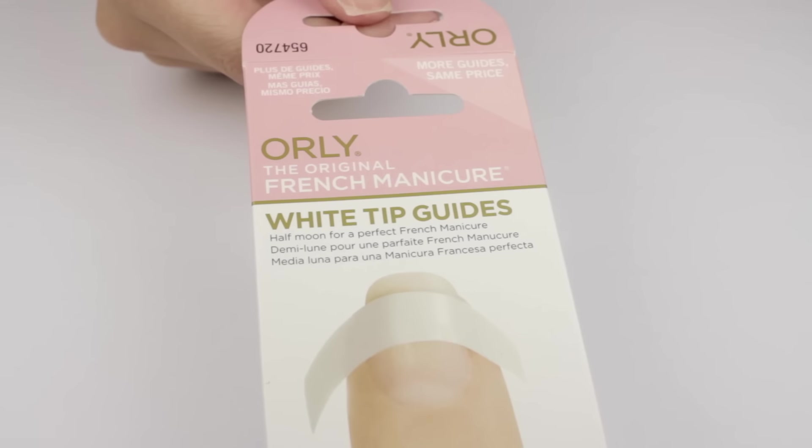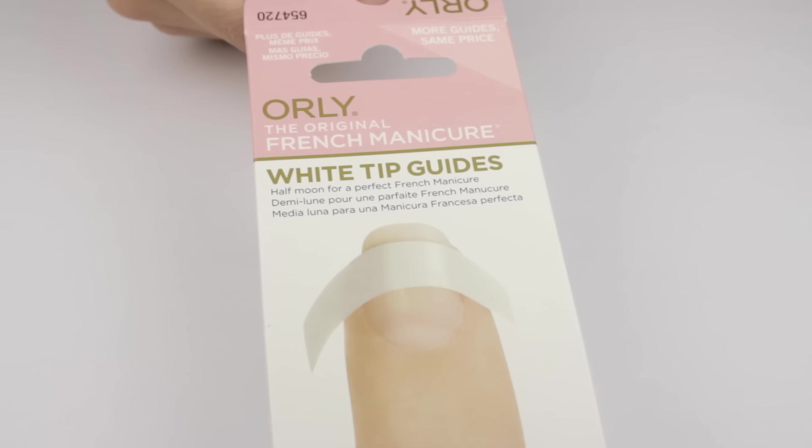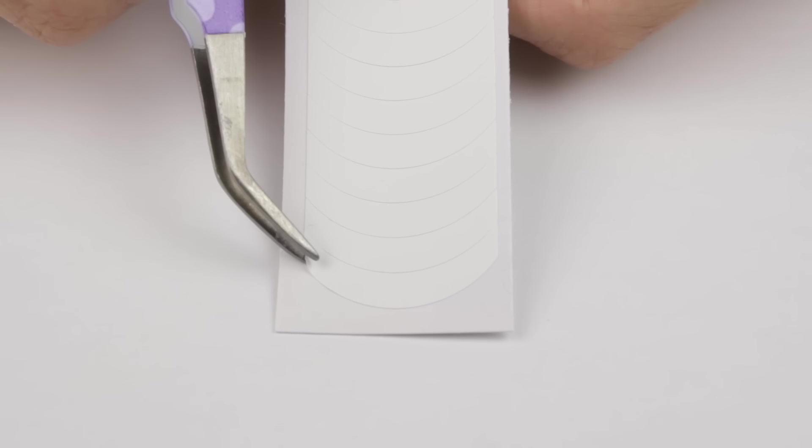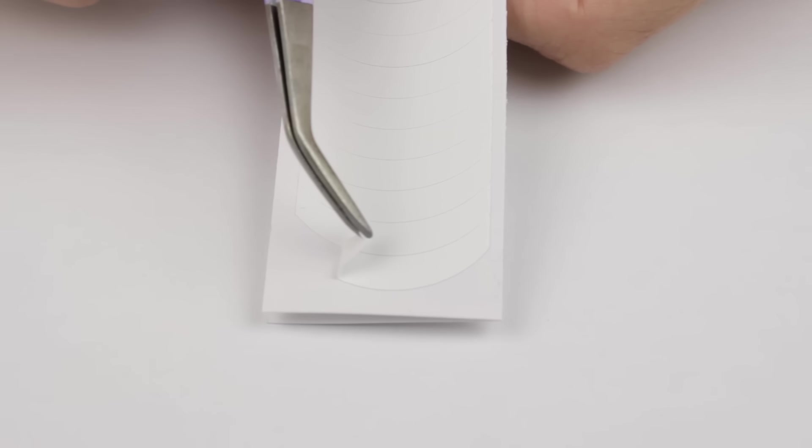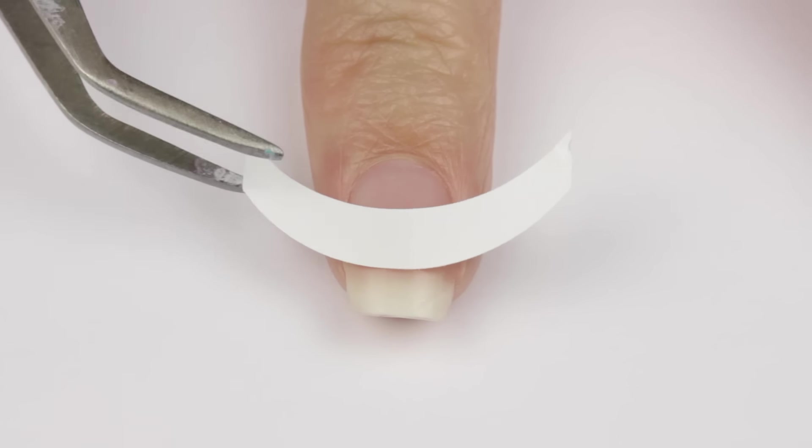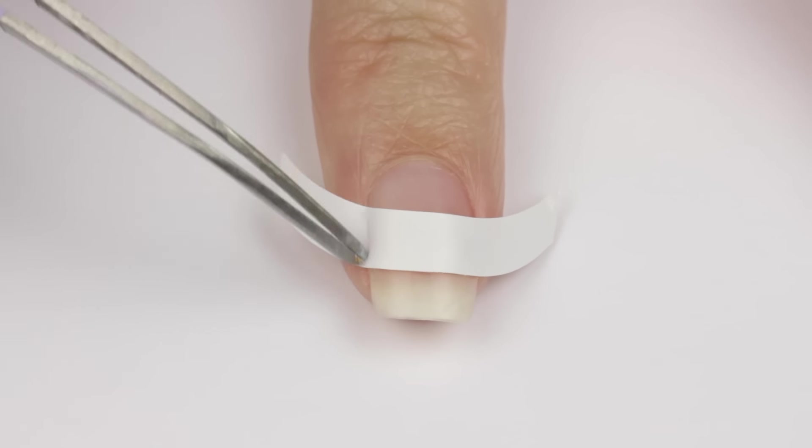Moving on to the second way, for this method that's perfect for beginners we're going to be using some white tip guides. You can find these at any drugstore, a ton of different brands make them. Just peel them off using your fingers or tweezers and then apply it firmly right below your smile line, this is where the white meets the pink.